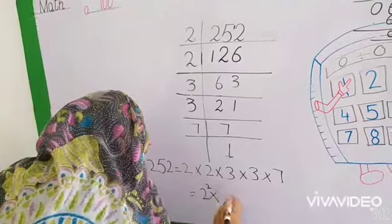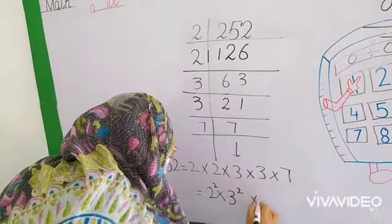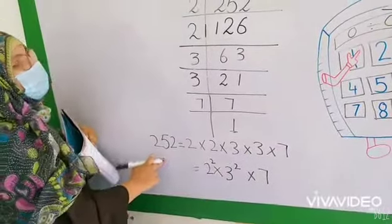2 times 2, so this is 2 squared. This is 3 squared, multiply by 7, and our answer is the same as 252.